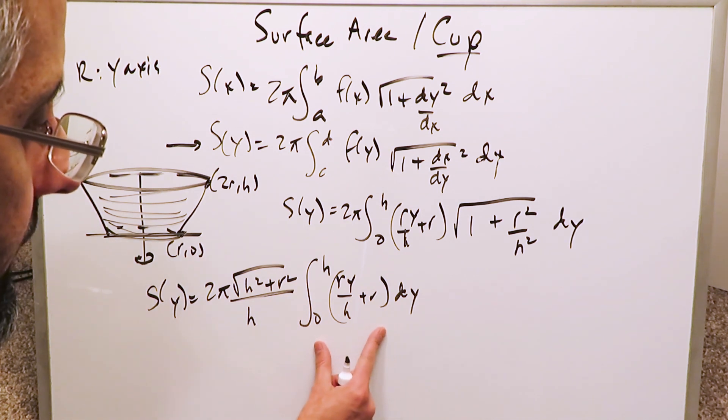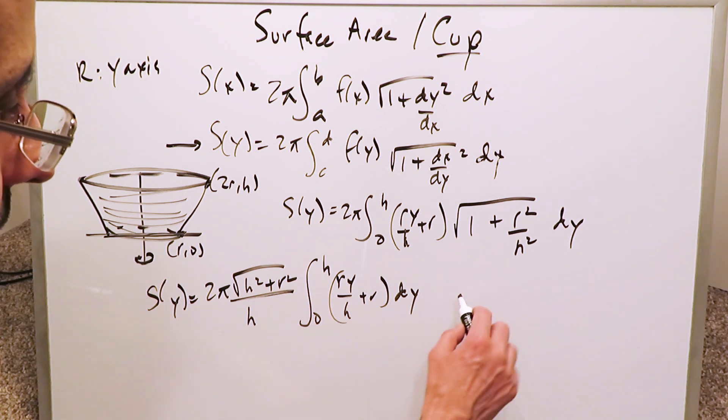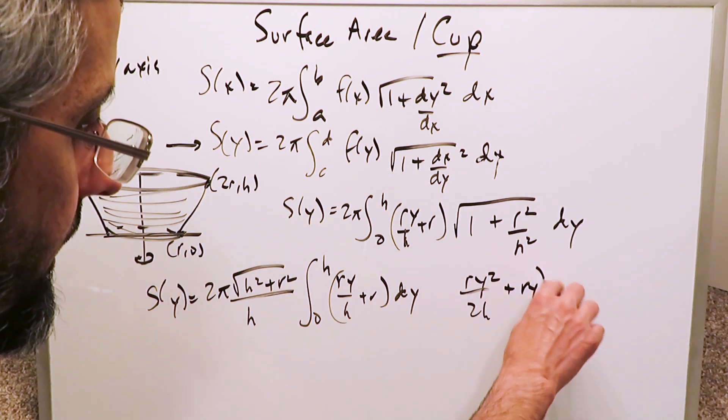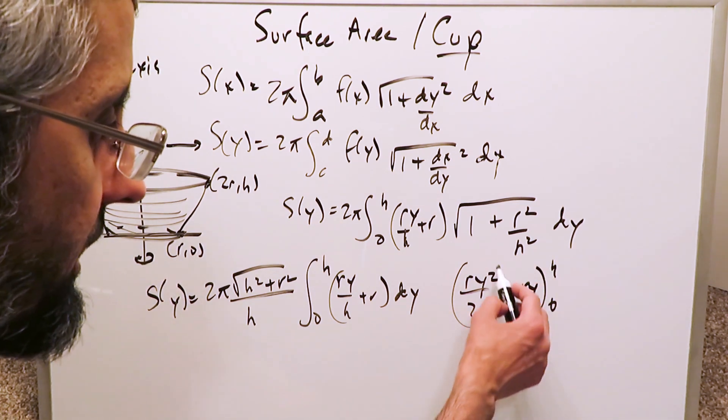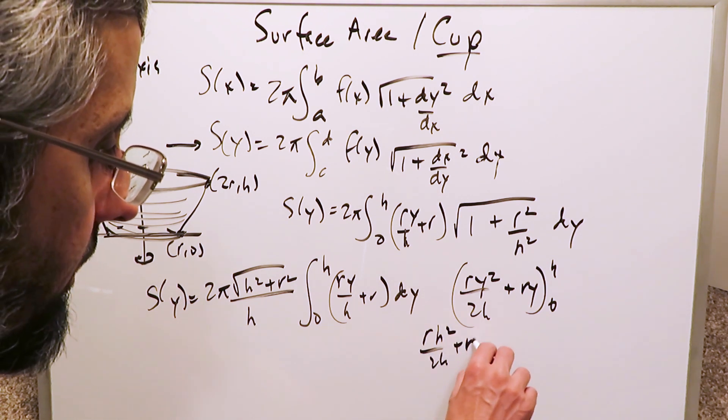We have over here a simple integral, polynomial integration with respect to the y variable. When you do the antiderivative, you get ry²/2h plus ry. Upper limit h, lower limit 0, which is meaningless. You just bring in the h's. You end up seeing rh²/2h plus rh.